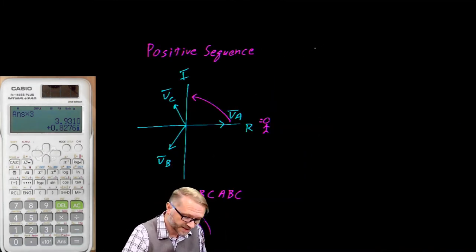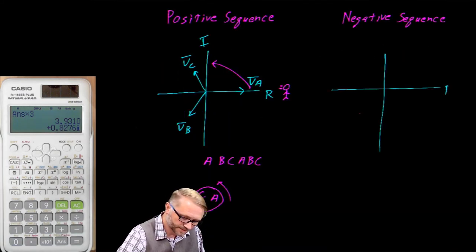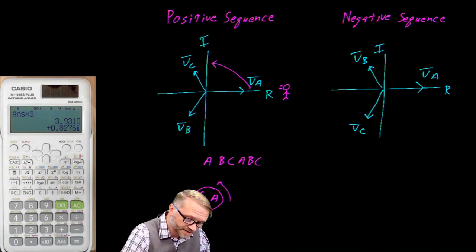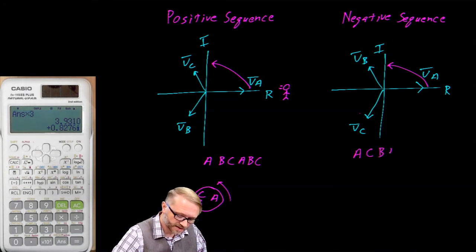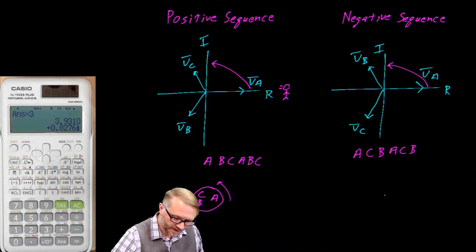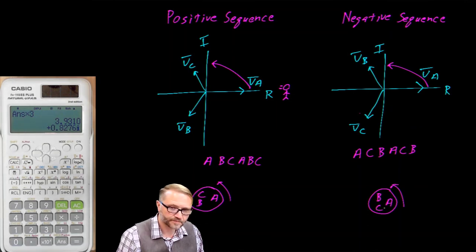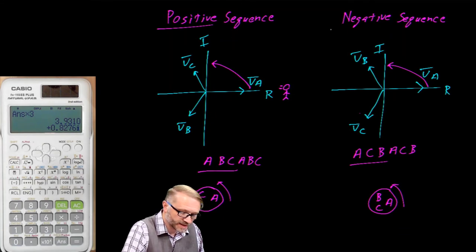There's nothing that says we can't have a negative sequence. On the complex plane, we again place the A vector at 0 degrees, but this time we swap B and C: C is at negative 120 and B is at positive 120. As the vectors rotate, you see A, C, B, A, C, B. We call this the ACB sequence — or negative sequence — as opposed to the ABC positive sequence. Why do you care? First, consider a motor connected to this three-phase system.